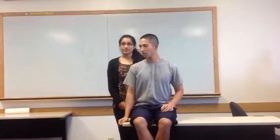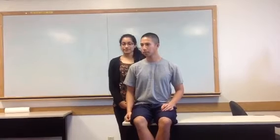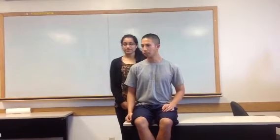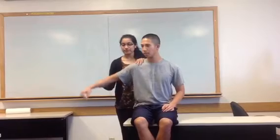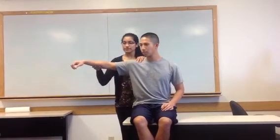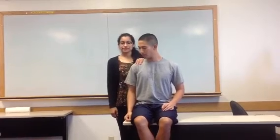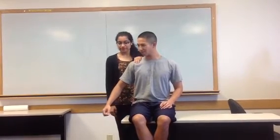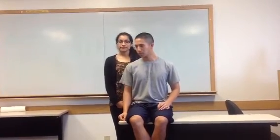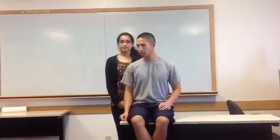For manual muscle tests, shoulder abduction grade 2: the PT will bring the patient into shoulder abduction and back down, then ask the patient to repeat the range of motion. The patient is only able to provide partial range of motion. Therefore, the PT will ask the patient to lie in supine.